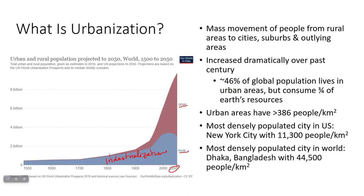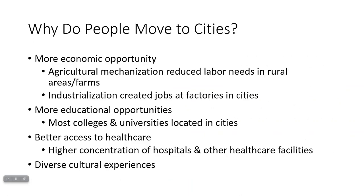Quite a few people packed into a small space means higher population density, which is going to have a much greater impact on the environment. Why do people move to cities? As the Industrial Revolution happened and mechanization replaced farm workers with machines, those workers no longer had jobs. At the same time, factories were being built that needed people, so there was more economic opportunity in the cities.